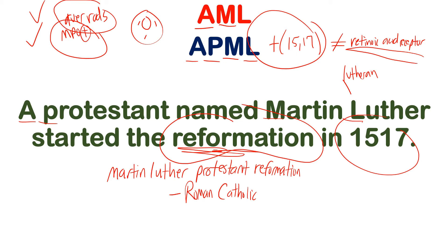When you look at APML — acute promyelocytic leukemia — they'll often ask: what's the most common way to get AML? That's the subtype acute promyelocytic leukemia, which is a translocation of 15 and 17. How do you remember? Look at the word: A Protestant named Martin Luther. Martin Luther did the Reformation in 1517 — translocation of 15 and 17 — which alters the retinoic acid receptor. 'Reformation' reminds you of retinoic. Simple little mnemonic.